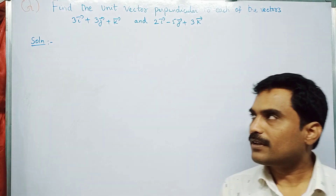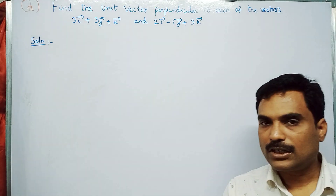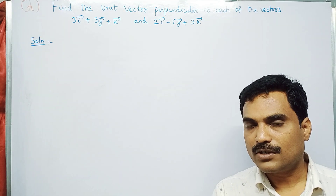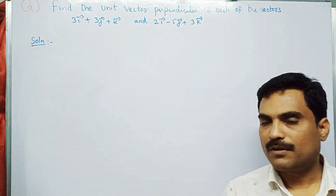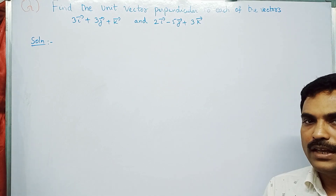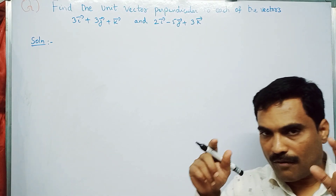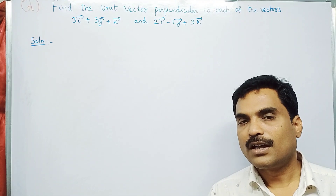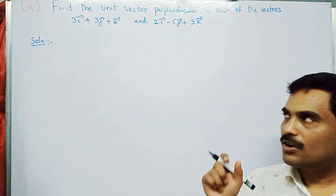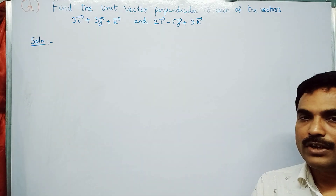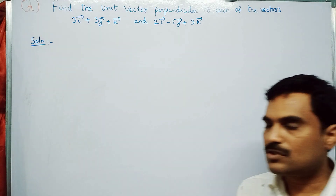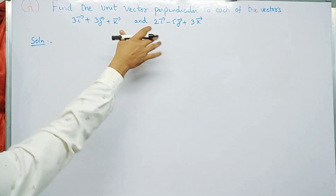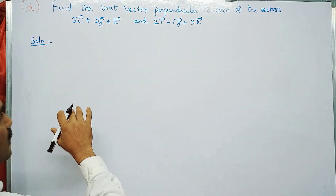For this, you need to find a-bar cross b-bar first. Then you take the magnitude of a-bar cross b-bar. Finally, substitute those values into the formula to get the required solution. Step one: write the given vectors first.